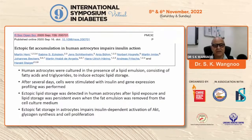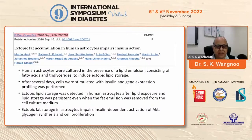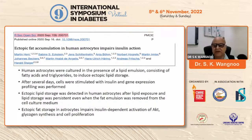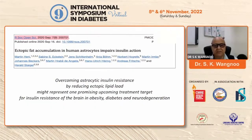There have been many data in the literature showing that ectopic fat accumulation in human astrocytes impairs insulin action. Researchers cultured human astrocytes in the presence of a high lipid content lipid emulsion consisting of fatty acids and triglycerides to induce ectopic lipid storage. After several days, the cells were stimulated with insulin and gene expression profiling was performed. Ectopic lipid storage was detected in human astrocytes after lipid exposure, and lipid storage was persistent even when the fat emulsion was removed from the cell culture medium. The ectopic fat storage in astrocytes impairs insulin-dependent activation of AKT, glycogen synthesis, and cell proliferation. Overcoming astrocyte insulin resistance by reducing ectopic lipid accumulation might represent one of the promising upcoming treatment targets for brain insulin resistance in obesity, diabetes, and neurodegeneration.